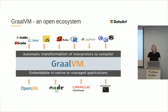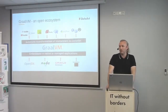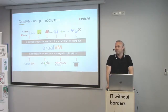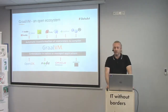GraalVM is a big ecosystem. It contains a lot of tools that allow developing programs in different languages. First of all, GraalVM is based on HotSpot, so it's possible to write and run applications in Scala, Kotlin, and Java because it contains an interpreter for bytecode. Also, there is a special component inside GraalVM called the Truffle framework, with written interpreters for other languages such as JavaScript, Ruby, R, Python, and even C and C++.